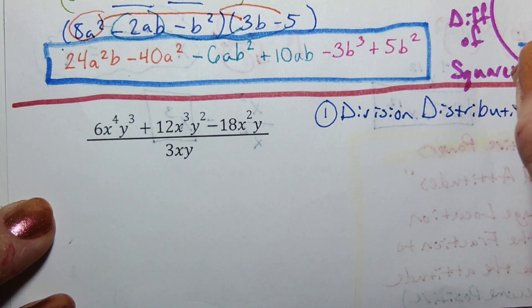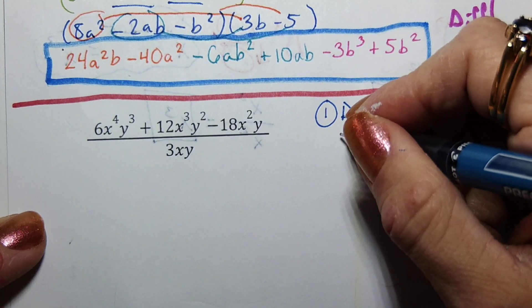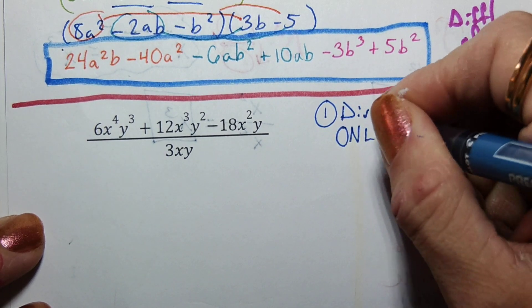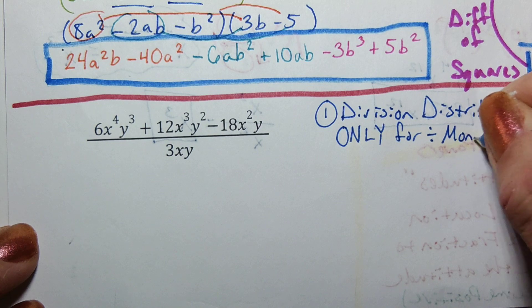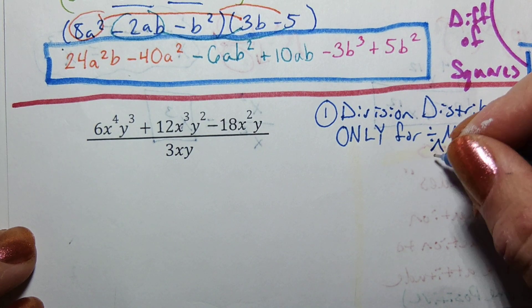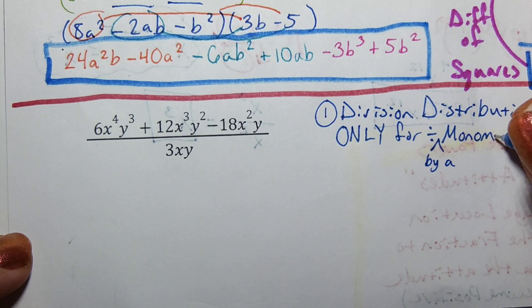We can only use this for dividing monomials - divide, let's say, dividing by a monomial.